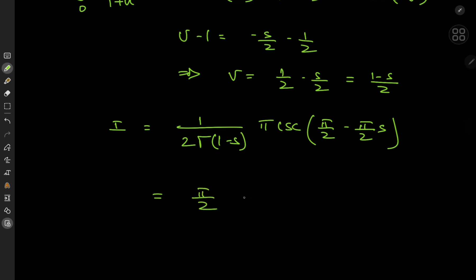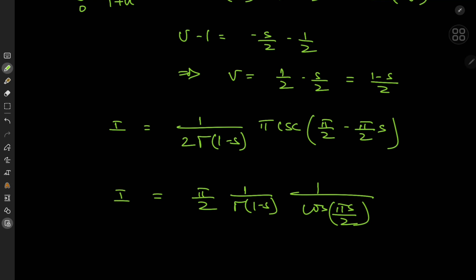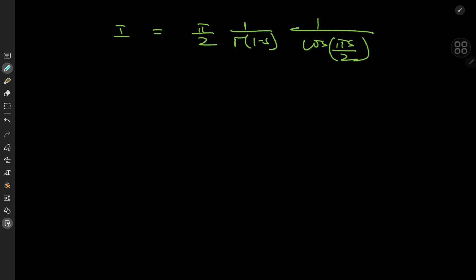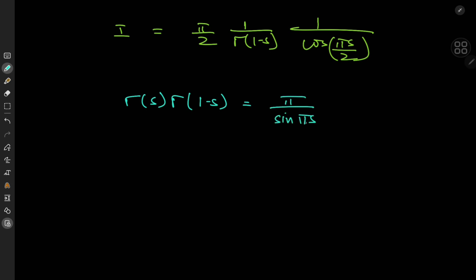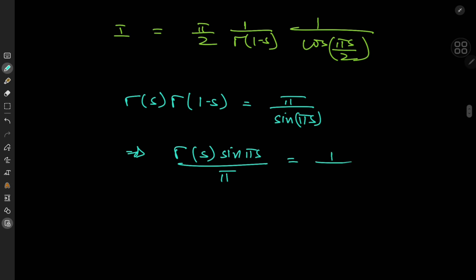So we have pi over two times one over gamma(1-s) times the secant — the reciprocal of the cosine — of pi s over two. We can make this more compact by working with the gamma(1-s) term. Invoking Euler's reflection formula one more time: gamma(s) times gamma(1-s) equals pi over sin(pi s). This means gamma(s) times sin(pi s) divided by pi equals one over gamma(1-s), which is exactly the term we need.